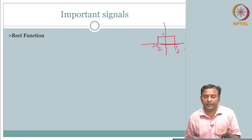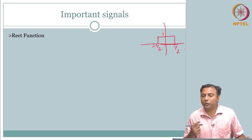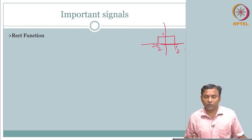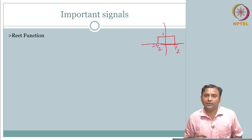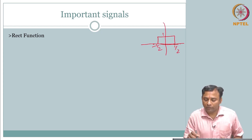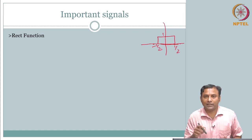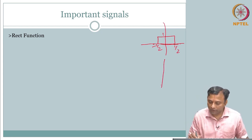The rect function in 2D is a direct extension. Instead of t, now we use the variables x and y — the spatial variables. So the rect function is going to have x, y — two dimensions — and it is going to be 1 over what range? If in 1D it is minus half to half, in 2D it has to span an area: minus half to half in x direction, minus half to half in y direction. So if you take the plane, you have a rectangular region.